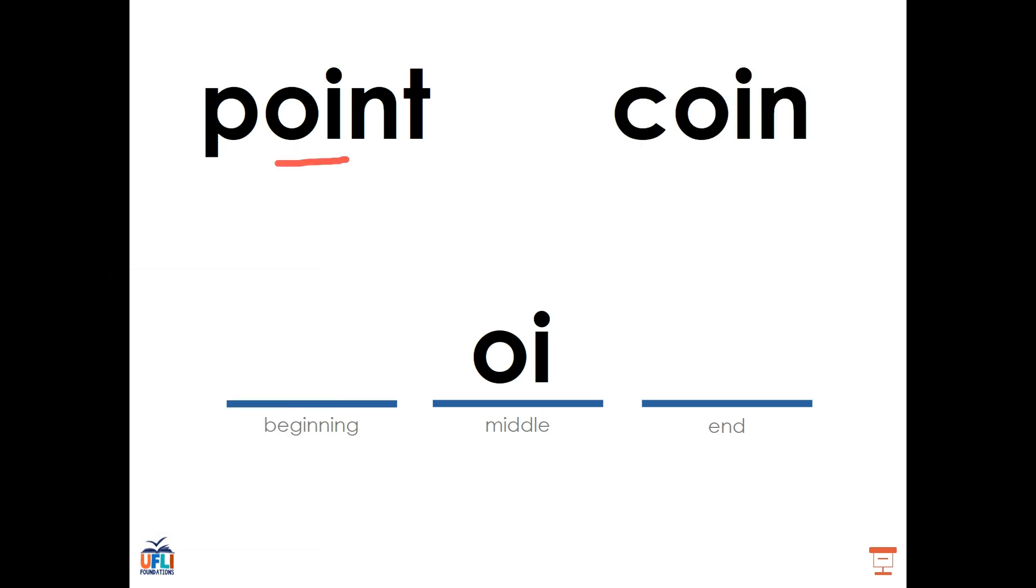Another example is the word coin: C, OI, N, coin. Again, we see that OI in the middle of the word and we hear the OI sound.